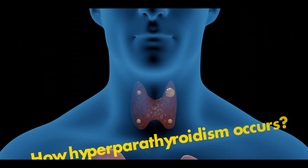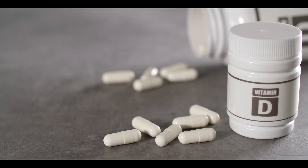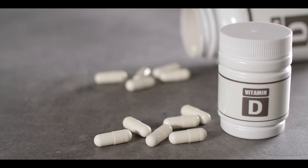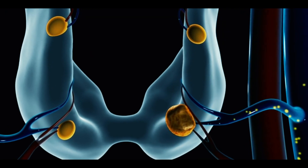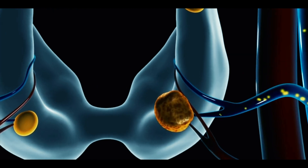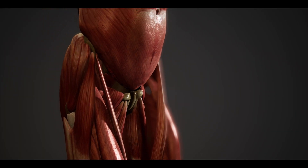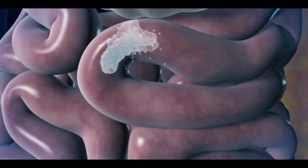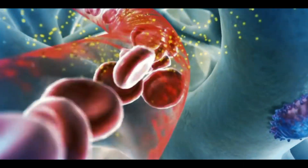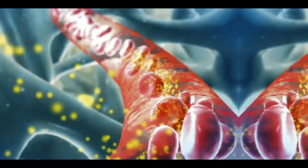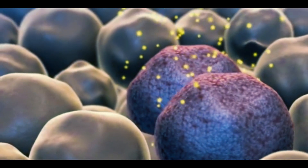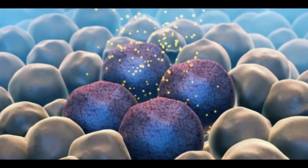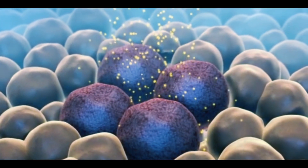How does hyperparathyroidism occur? Hyperparathyroidism occurs due to vitamin D deficiency or tumor growth in parathyroid glands. If vitamin D deficiency occurs in our body, calcium cannot be absorbed from the intestine into the blood and blood calcium levels critically fall. In this condition, parathyroid glands become over-stimulated and multiply to become enlarged.